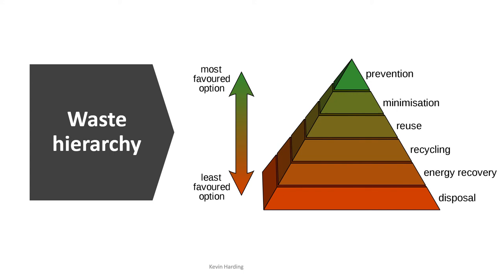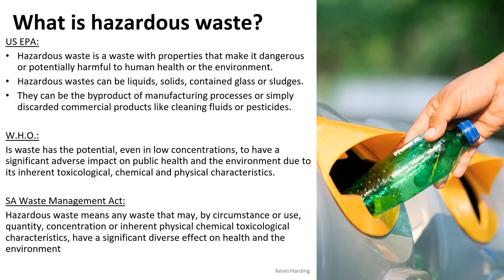Coming back to something we've seen before — the waste hierarchy. The most favorable option is at the top: prevention, minimization, reuse, recycling, energy recovery, and disposal. This is the 3R or 4R model, now more commonly called the circular economy, so that we can achieve prevention and avoid disposal. However, when we do have disposal, some of that waste might be hazardous — and what is hazardous to you versus me can differ.